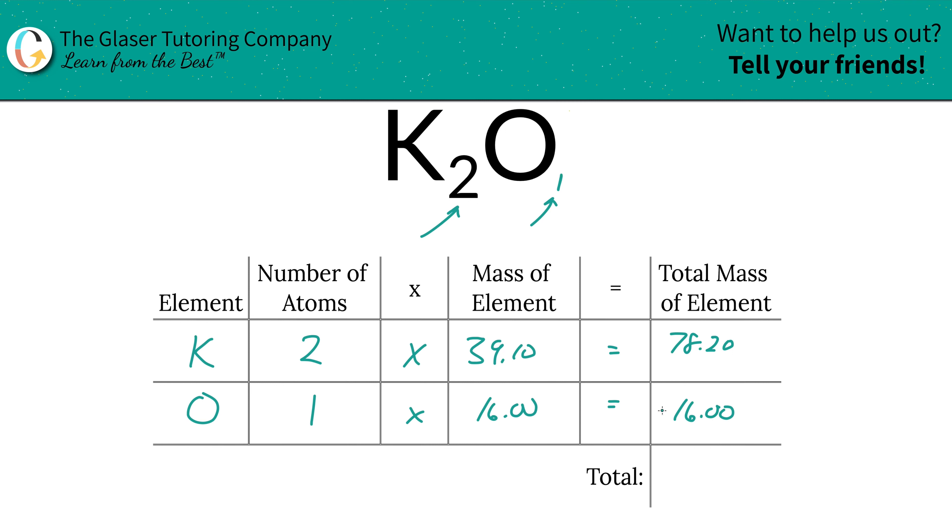And then that almost looks like 16W, right? Then we're going to add these together. So the total mass here is going to be 94.20. Since we're solving for molar mass, the units here are in grams per mole.